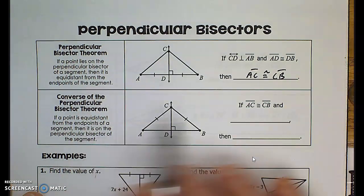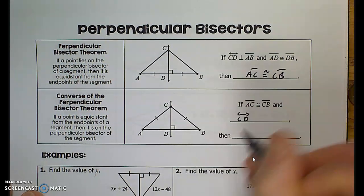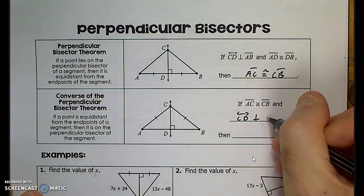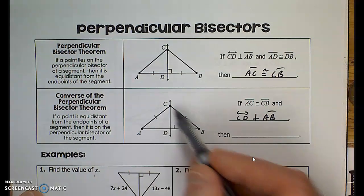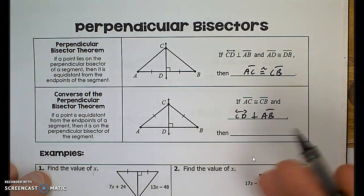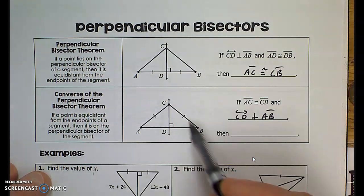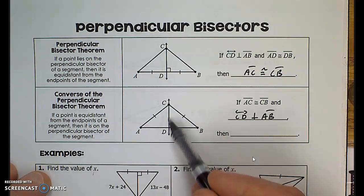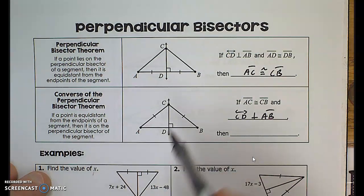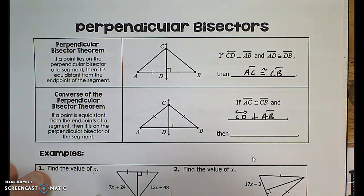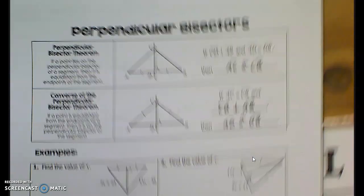Now the converse: if CD is perpendicular to line segment AB, and we know that distance CA is congruent to distance CB — that's given — what can we derive? Looking at these two triangles, I can now use the hypotenuse-leg theorem because the hypotenuse is the same in both triangles, and this shared leg is congruent unto itself. By HL, the two triangles are congruent, so corresponding parts are congruent: AD corresponds to BD, therefore AD is congruent to DB.